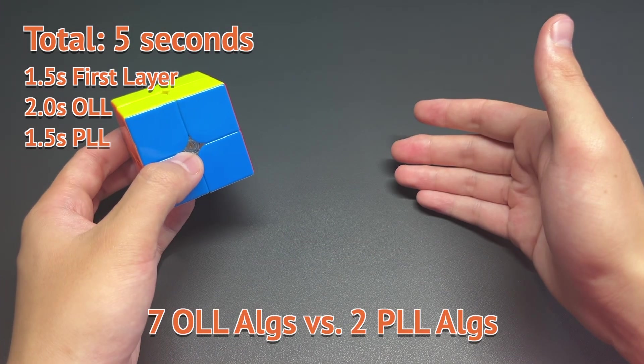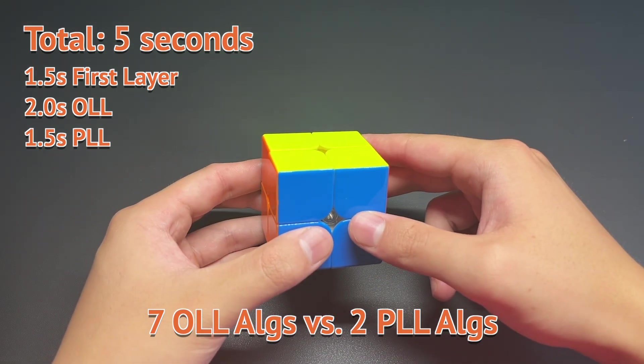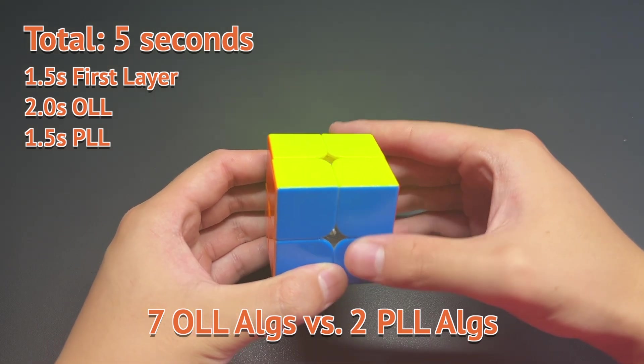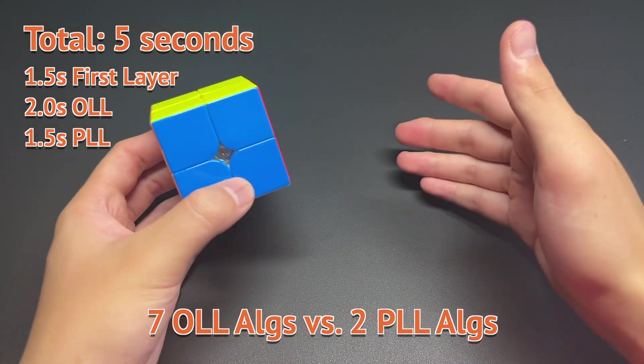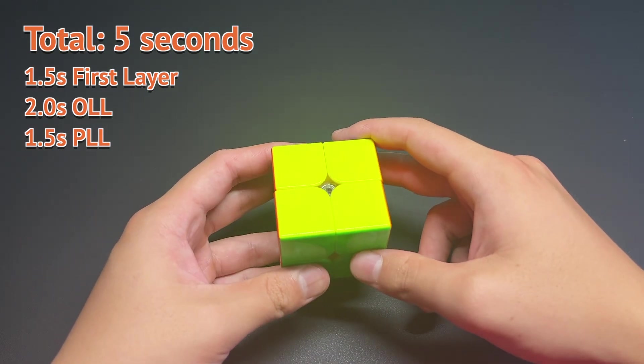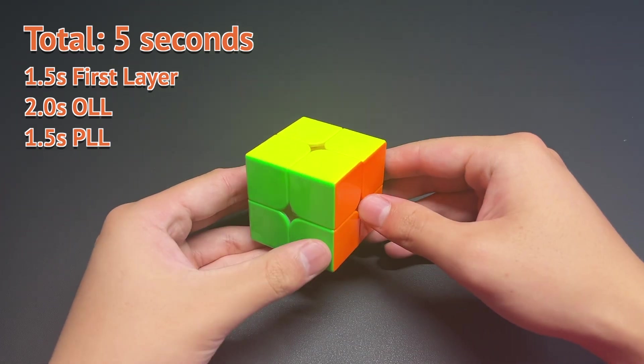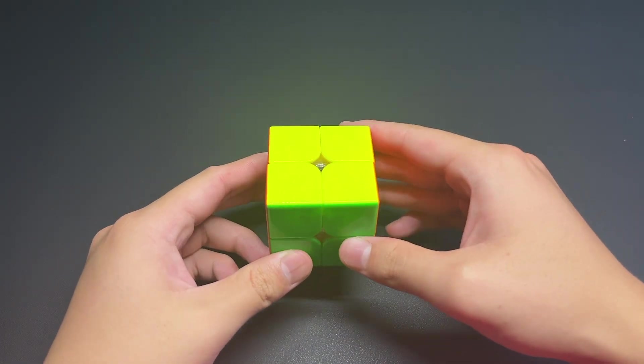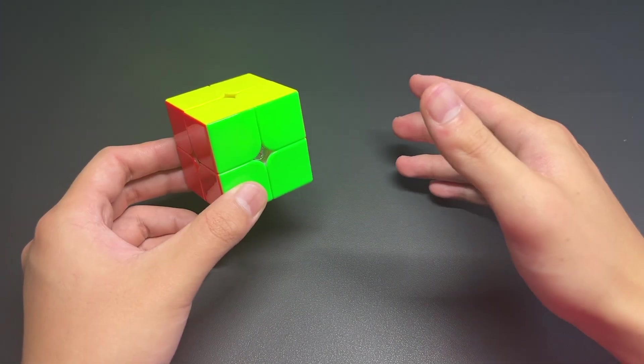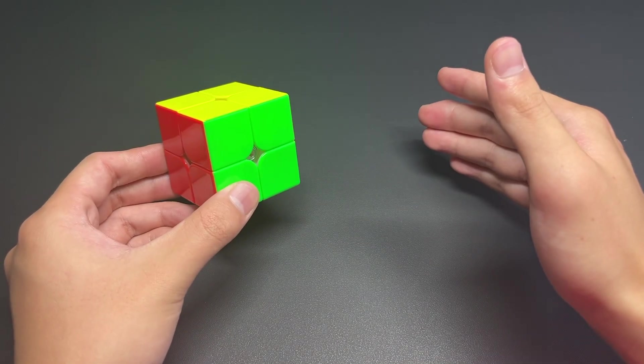And the reason that I'm giving 2 seconds to the OLL step is because, first of all, there are more OLL cases. In the 2x2, there are only 2 PLL cases. Well, technically 3. One of them is solved. However, for OLL, there are 7. And these are all the edges-oriented OLL algorithms in 3x3 terminology. You can also view the 2x2 as a 3x3 without the edges. And then, although the PLL algorithms are technically longer, they are easier and faster to recognize. So, it should be really a blast through the PLL stage.